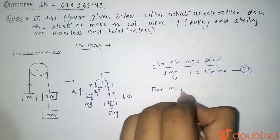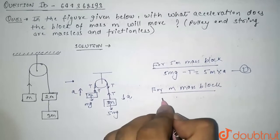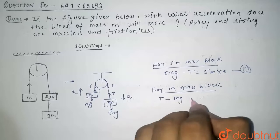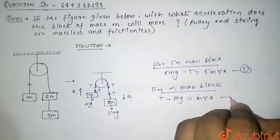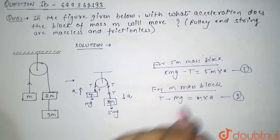And for m mass block, we can write it as tension minus mg is equal to mass into a. So we have to find the value of acceleration. So we will add both these equations.